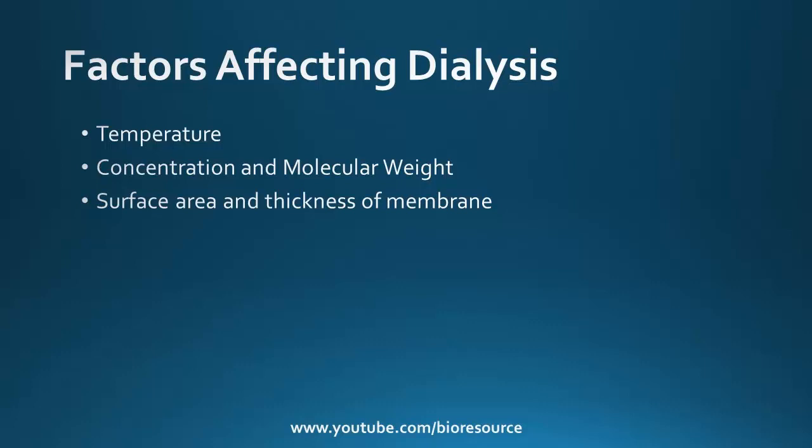Dialysis can also be affected by concentration and molecular weight. Higher concentration leads to a faster rate of diffusion. Higher molecular weight proteins diffuse more slowly, as they can clog the membrane. The rate of dialysis is directly proportional to the surface area and inversely proportional to the thickness of the membrane — a higher surface area results in a faster diffusion rate and faster completion of dialysis.